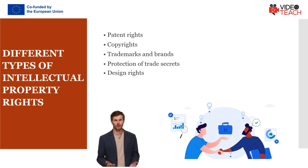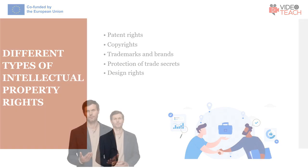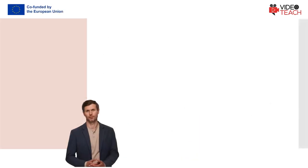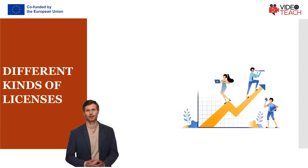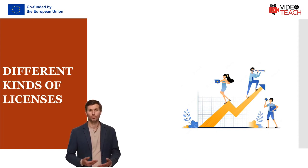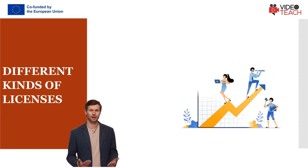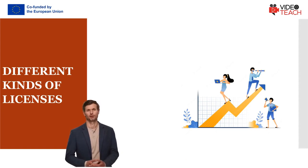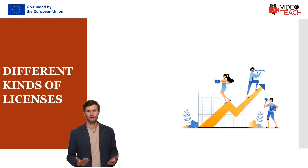Examples of trade secrets include customer lists, formulas, computer algorithms, and survey results. The purpose of sharing intellectual property rights is to ensure that a public authority can use the intellectual property while allowing the developing company to maintain its intellectual property rights and opportunities to commercialize the intellectual property.